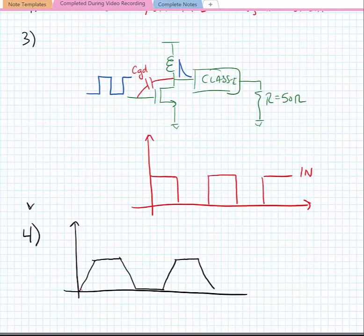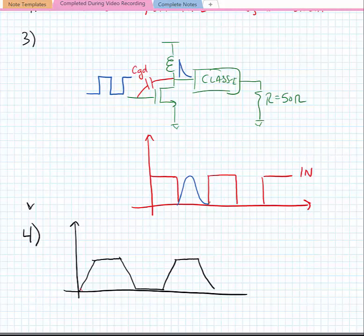So I know that ideally, I've tried to shape the pulse in my network so that I create this voltage waveform that looks something like this, and it goes to zero, and the derivative goes to zero right at the instance of switching. But because of the switch, it's going to pop back up and then exponentially decay. And this is going to happen over and over again. So I'm going to dissipate just a little bit of power due to that CGD in every cycle.